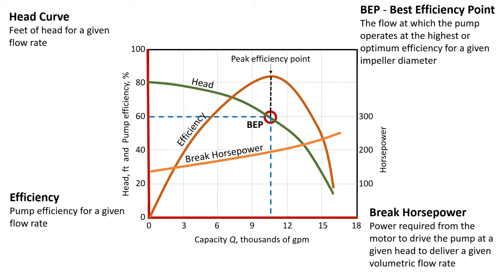Now if we put the brake horsepower curve on here, we can see the power requirements. Brake horsepower is the power required from the motor to drive the pump at a given head to deliver a given volumetric flow rate. If we draw a line over from the brake horsepower curve at where the flow rate intersects it, we see that this requires about 200 horsepower.